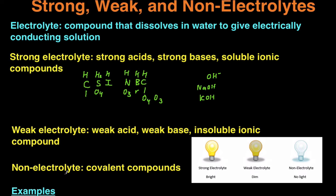Non-electrolytes are compounds that, when they dissolve in water, do not conduct any electricity. And those are covalent compounds, because covalent compounds do not dissociate into ions unless they're acids or bases. So for your typical covalent compounds, they're going to be non-electrolytes. And when you run a current through a covalent compound solution, you're not going to get any light, because there are no ions present.